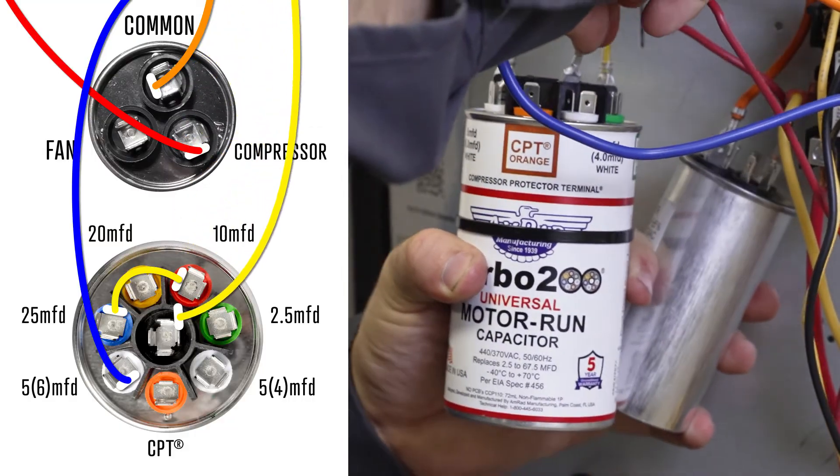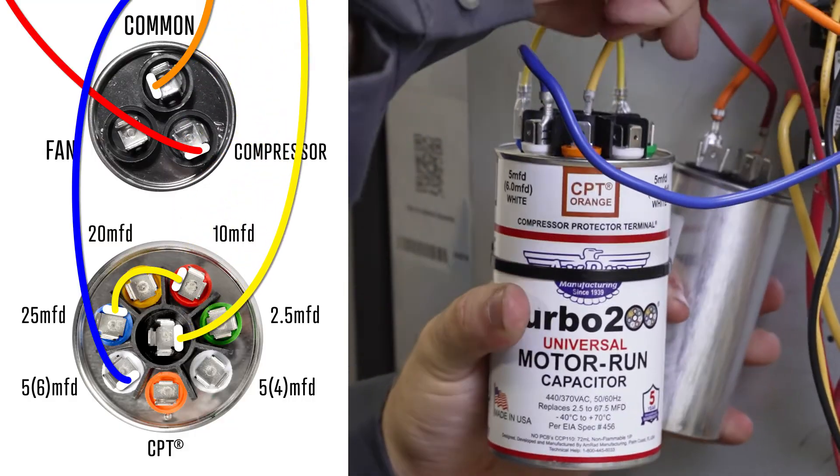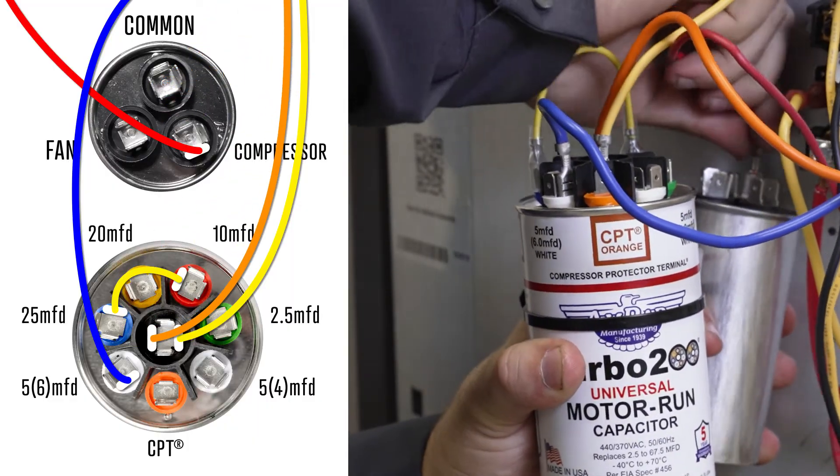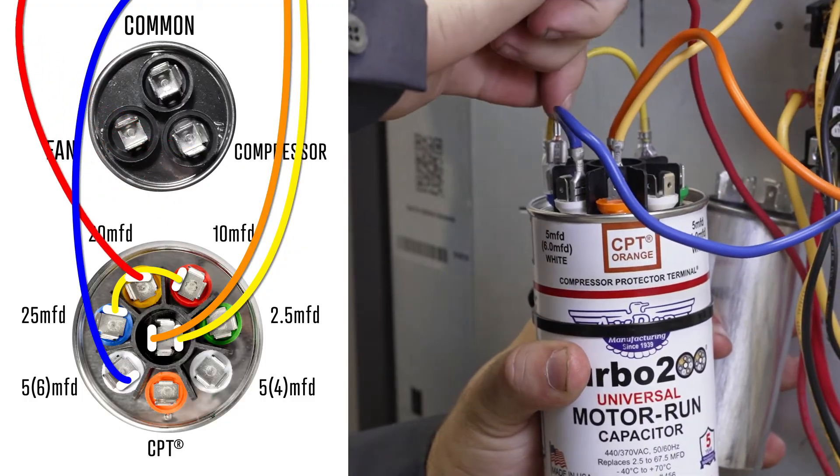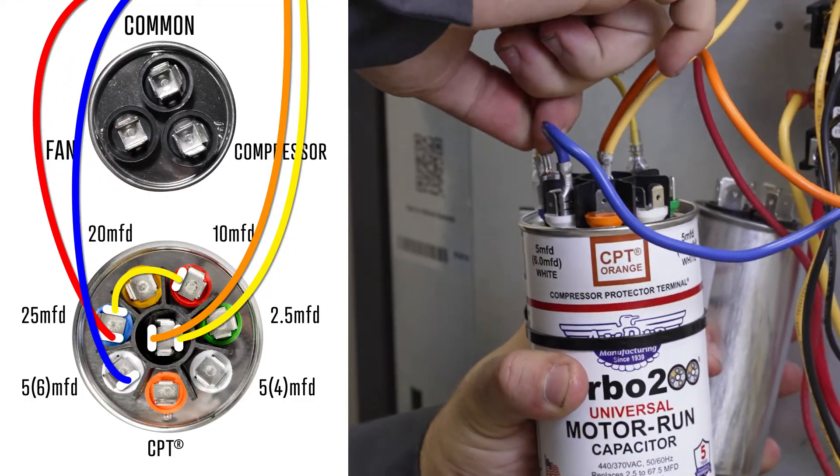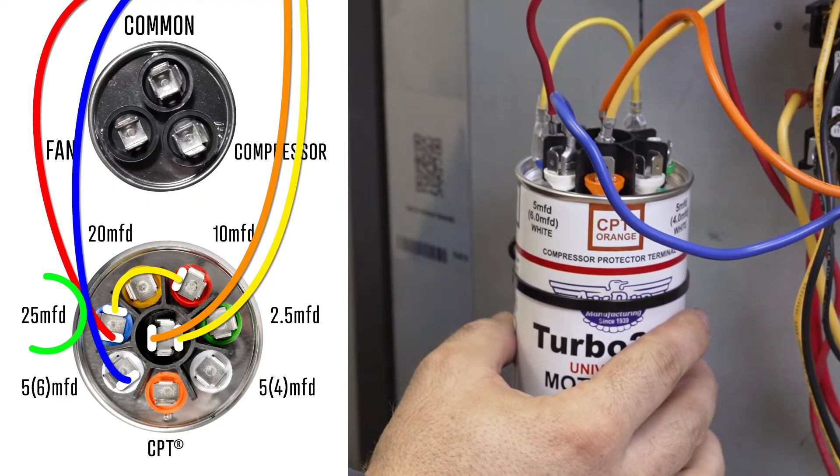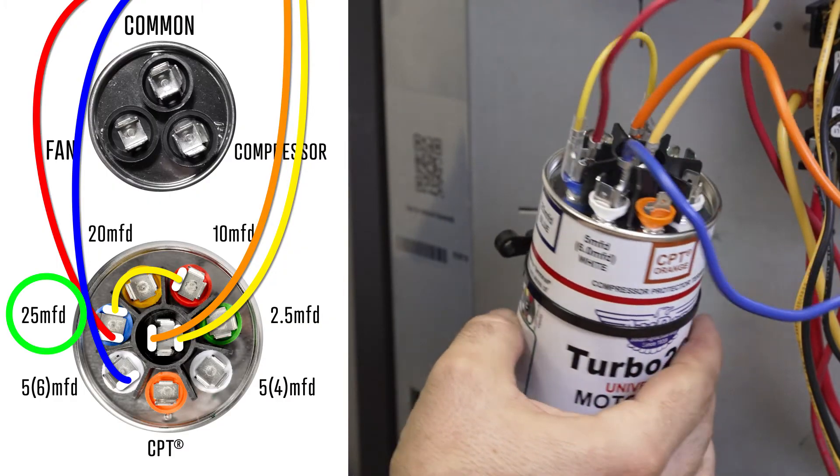Take the wires from the common terminal on the old capacitor and place them on the black common terminal in the middle of the turbo. Take the wires from the compressor terminal and place them on the highest MFD value terminal of our compressor chain on the turbo. In this case, the 25 MFD terminal.